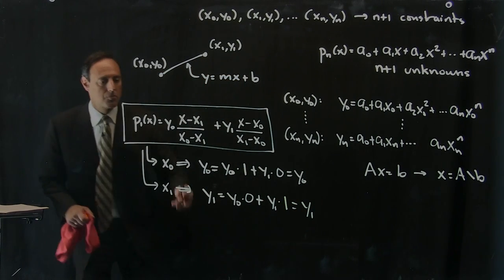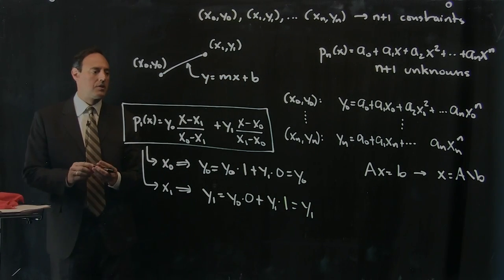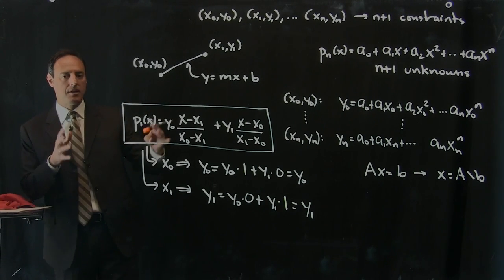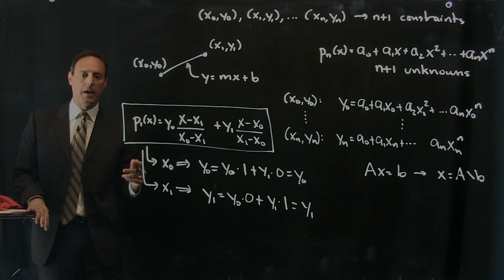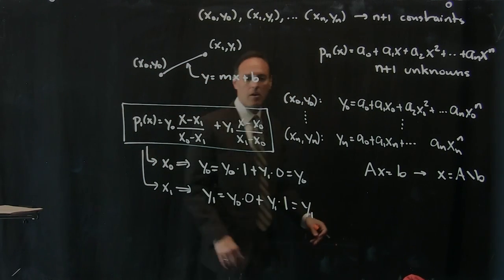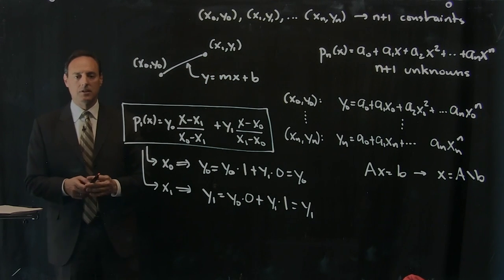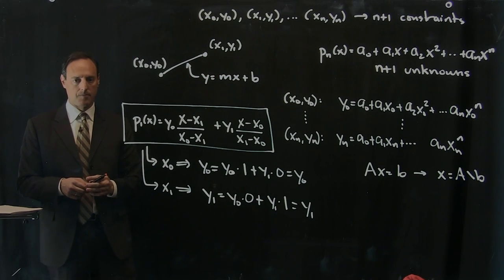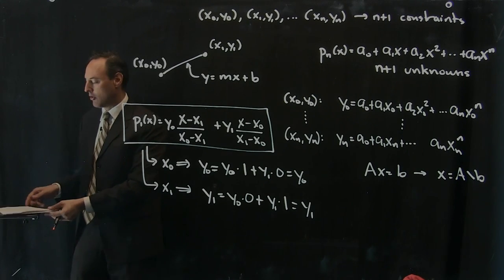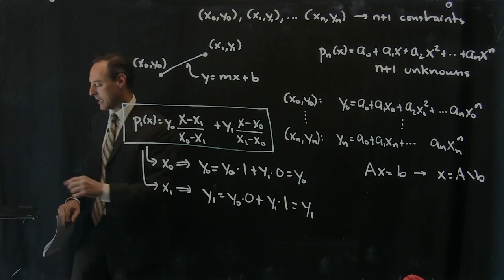So notice, just by writing it in this clever way, I don't have to solve a 2 by 2 system of equations. I've written down the formula in such a way, it's still a line fit, but I've done it in such a way that I don't have to solve any system of equations for this. Okay? So this is the main idea behind Lagrange polynomials. And let's generalize that here in a second.